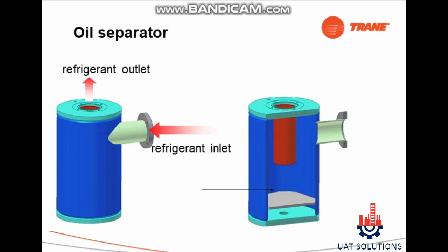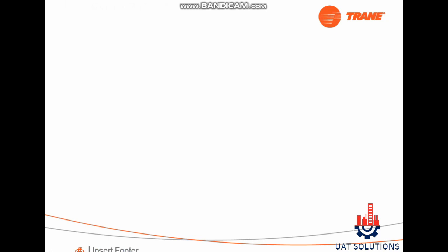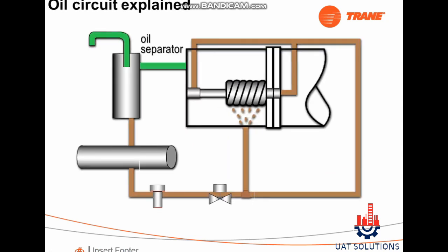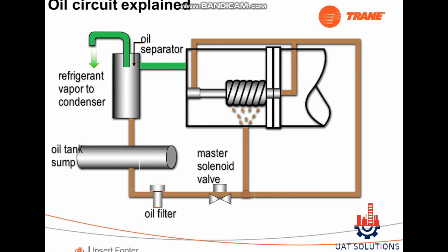Inside the oil separator: baffle, separation chamber, oil sump, oil filter, master solenoid valve, and rotor bearing are identified. Refrigerant vapor exits to the condenser from the oil tank sump.